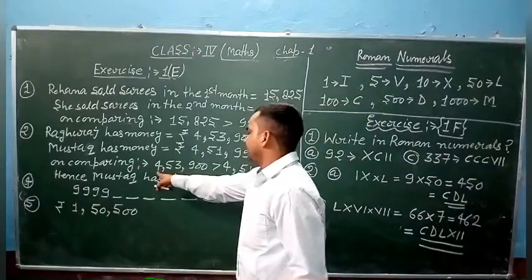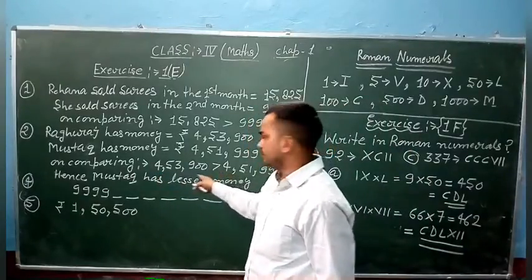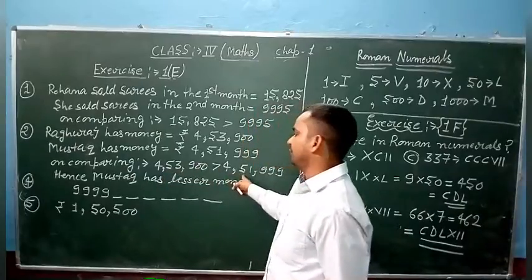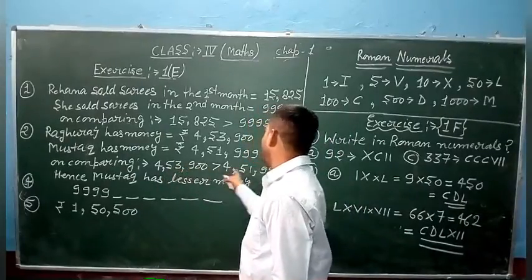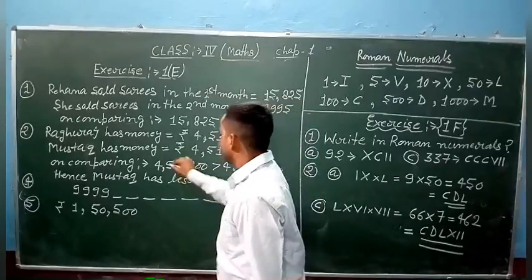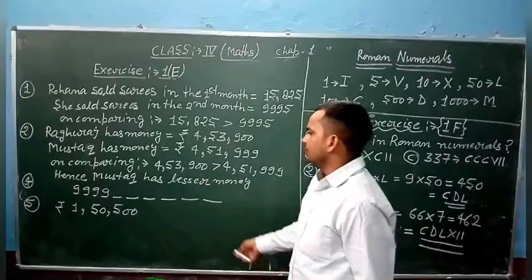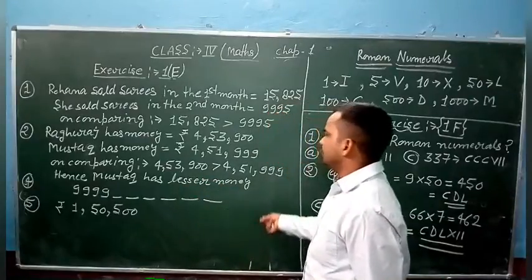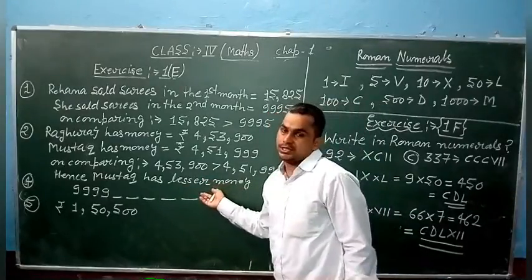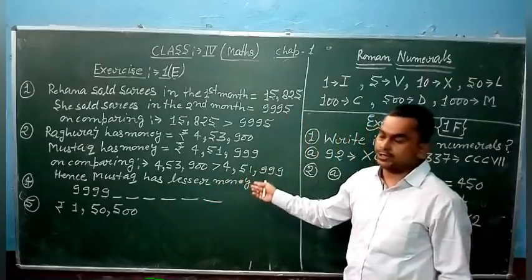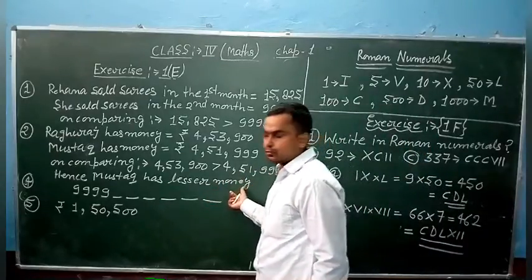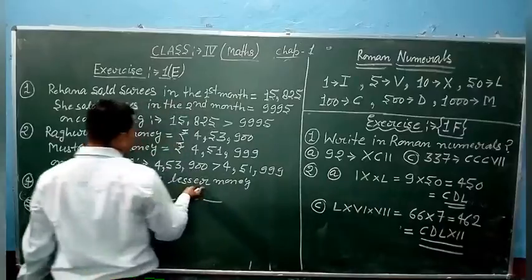When we compare, for comparing: 453,900 and 451,999. When we compare: 4, 4, 5, 5 are the same. 3, 1. 3 is greater than 1. The first number is greater. So hence, Mustafa has less money in his account.